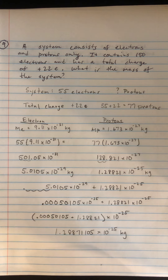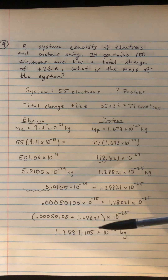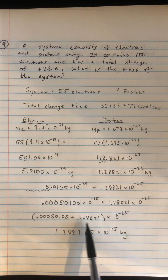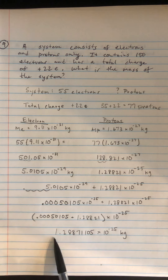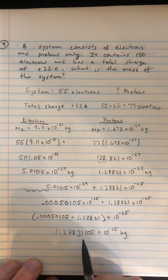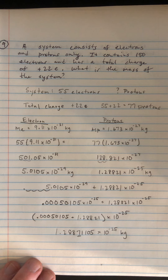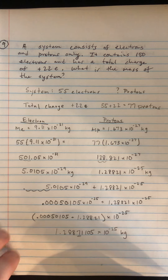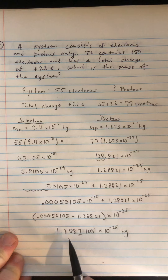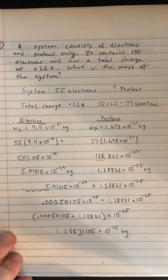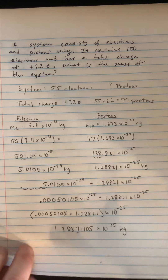It's worth noting how little the mass of the electrons actually affected the total mass of the system. The proton mass started the answer at 1.288, and it wasn't until the very end digits that the electrons had any impact at all. Electrons are so much smaller than protons that their mass really doesn't count for much — it's something like one in millions of the total mass. Just something to note.